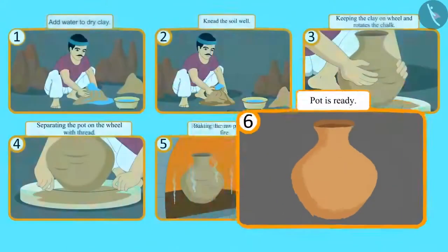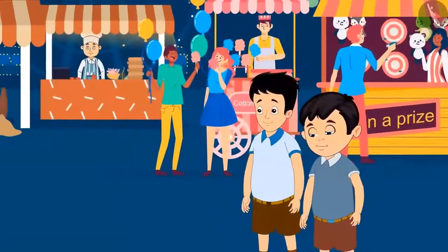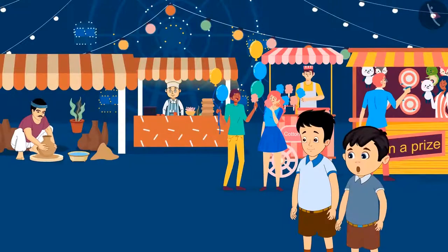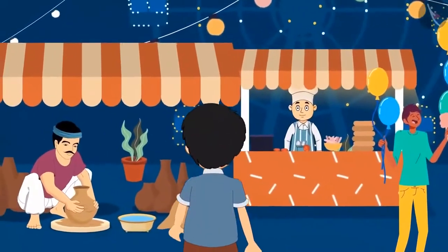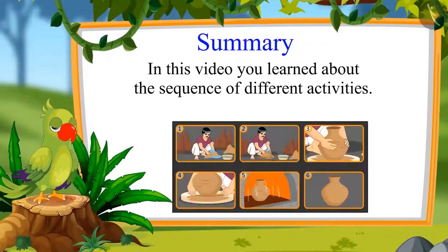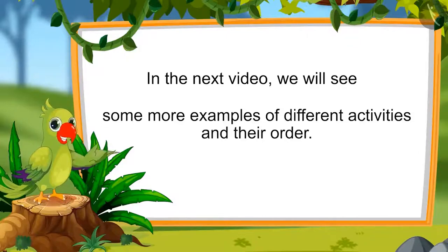As soon as the clay comes in shape, the pot maker separates it from the wheel with the help of a thread. After detaching it from the wheel, the raw pot is baked, and then the pot becomes ready. So children, this was the order of the process of making a pot. Chotu and Sonu then decided to go and try to make a pot themselves. That's all for today — you learnt about the sequence of different activities. In the next video we will see more examples. Bye-bye kids.